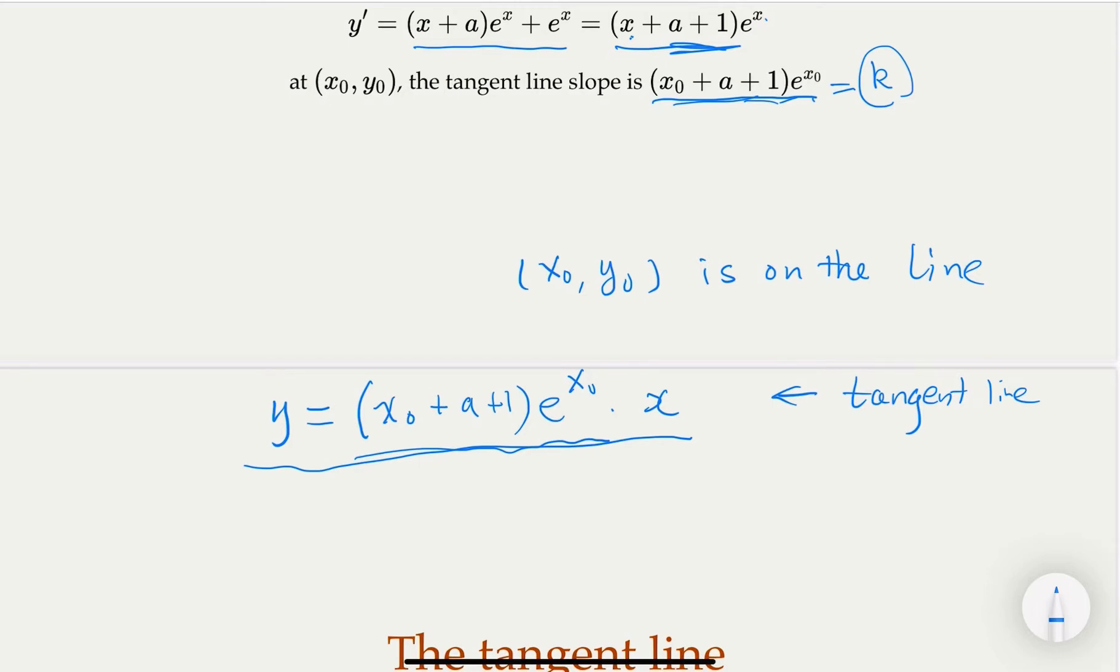So we would just plug in. What that means is that y₀, we know y₀. What is y₀? Because the original curve is y = (x + a)e^x, so y₀ would equal (x₀ + a)e^(x₀). However, since this is also on the tangent line, we're going to plug in x₀ to the right-hand side to get y₀. So this would be (x₀ + a + 1)e^(x₀), the slope, but the value here is going to be x₀. Because this x₀ is on both curves, it's on this curve and it's on this straight line.